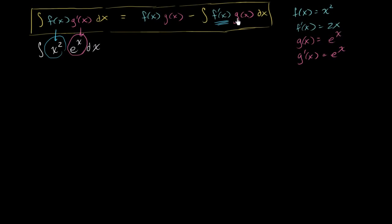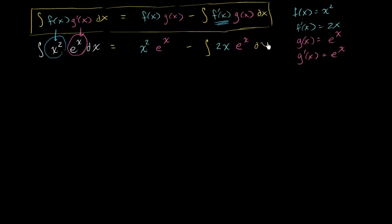Now we're ready to apply the integration by parts formula. This expression is going to equal f of x times g of x, which is x squared times e to the x, minus the antiderivative of f prime of x times g of x — that's 2x times e to the x dx. We're left with another indefinite integral. As you might guess, the key might be integration by parts again. Notice we reduced the degree: x squared is now just 2x.